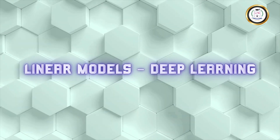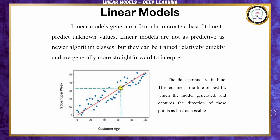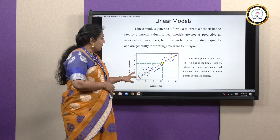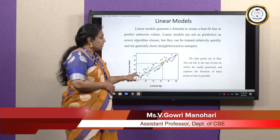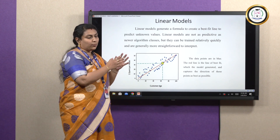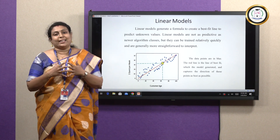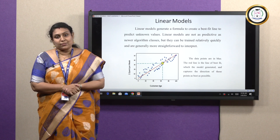Linear models are an important topic in machine learning and deep learning. A linear model generates a formula to create a best fit line to predict unknown values. Here we can see data points in blue color and the red line represents the model — the best fit line to classify the data. This model captures the data points in a particular direction; we can train the data to classify it into a best fit line.